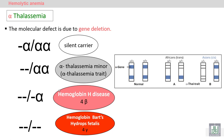In alpha thalassemia, we have four alpha globin genes — two alpha from the mother and two alpha from the father. In alpha thalassemia there is a deficiency of one, two, three, or four alpha globin genes. A very mild condition called silent carrier is due to deficiency of one alpha. Another condition is alpha thalassemia minor or alpha thalassemia trait, due to absence of two alpha globin genes.